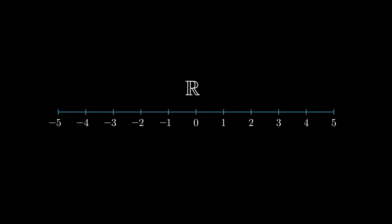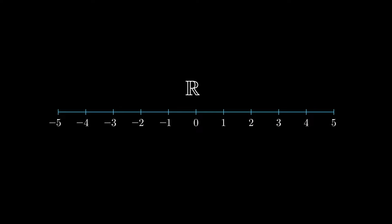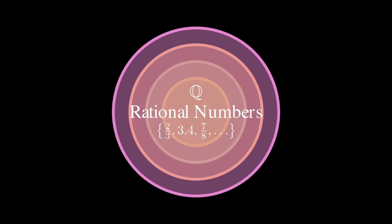In modern math, irrational numbers are formally defined as real numbers that are not rational. They have lots of intriguing properties, such as non-repeating, non-terminating decimal expansions. While irrational numbers might seem abstract and disconnected from reality, they're integral to our understanding of the numerical universe.